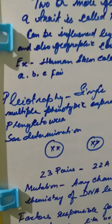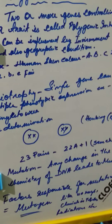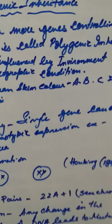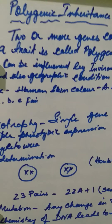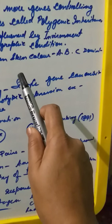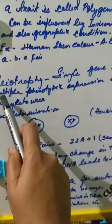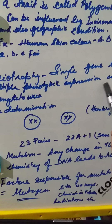The next concept is pleiotropy. Pleiotropy is where a single gene can exhibit multiple phenotypic expressions. You should focus on this carefully.